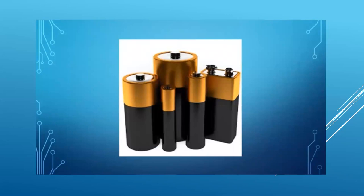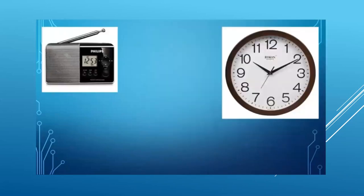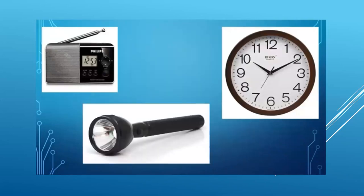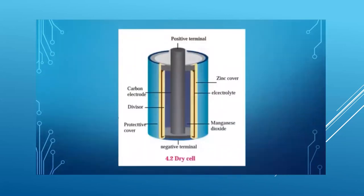Now let's learn about dry cells. It looks something like this — we have all seen this. Dry cells are used in radios, wall clocks, torches, etc. These are available in C and D sizes. Now let's see the construction of a dry cell. Take a used dry cell and remove its outer coating. Inside you will find a whitish metal layer — this is the zinc metal layer, which is the negative terminal of the cell.